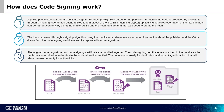How does code signing work? A public-private key pair and certificate signing request are created for the publisher. A hash of the code is produced by passing it through a hashing algorithm, creating a fixed-length digest of the file. The hash is a cryptographically unique representation of the file, and can be reproduced only by using the unaltered file and the hashing algorithm that was used to create the hash.